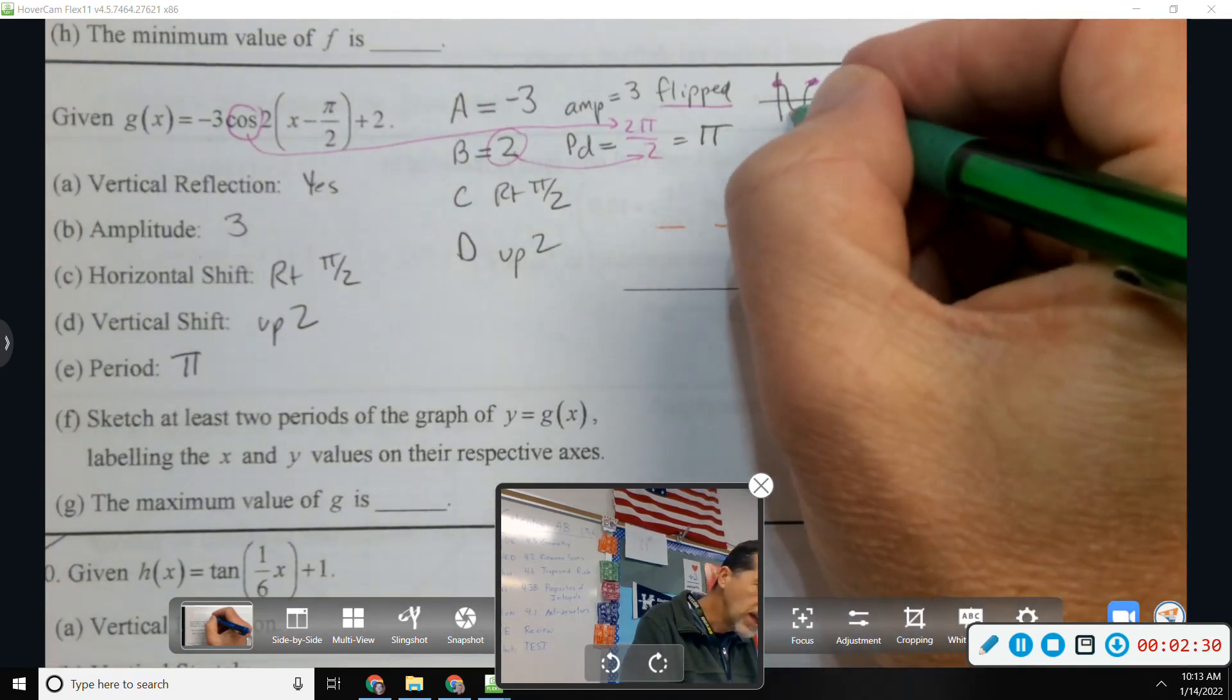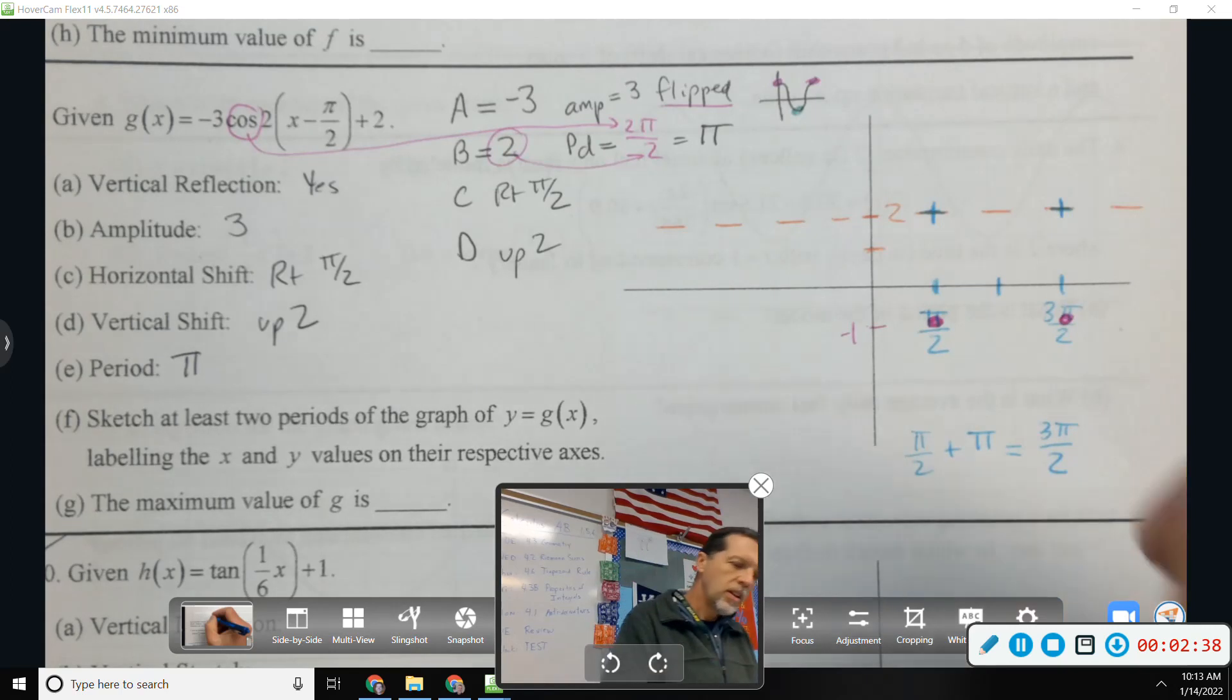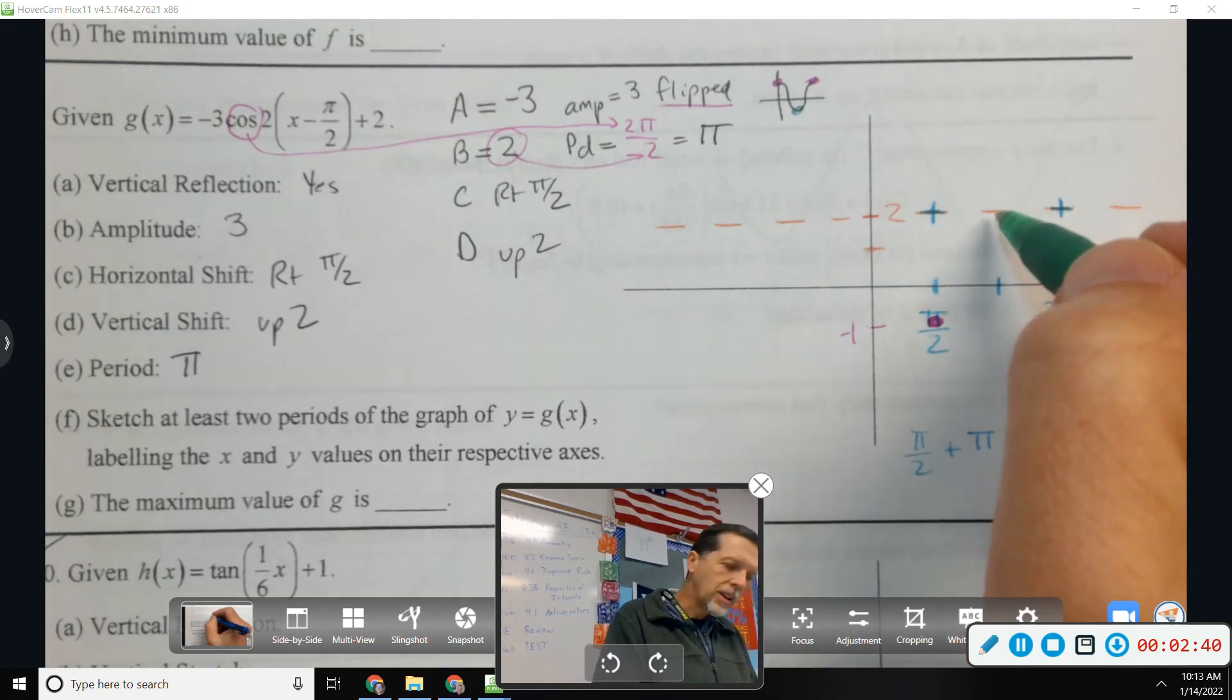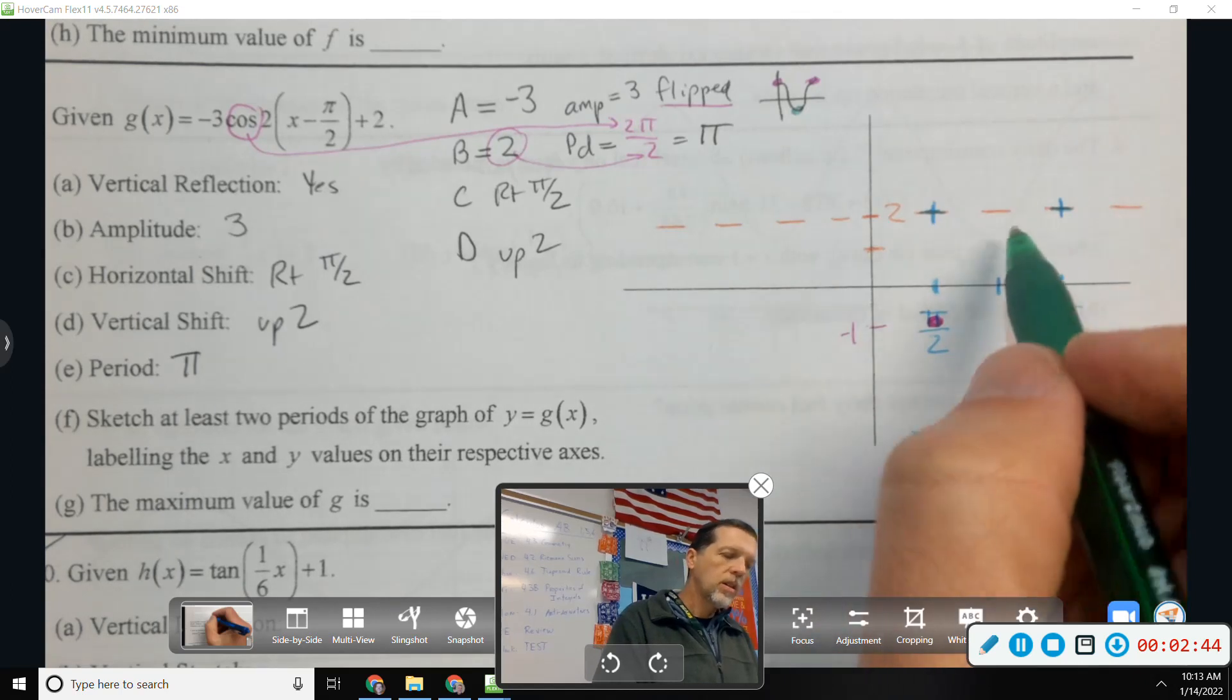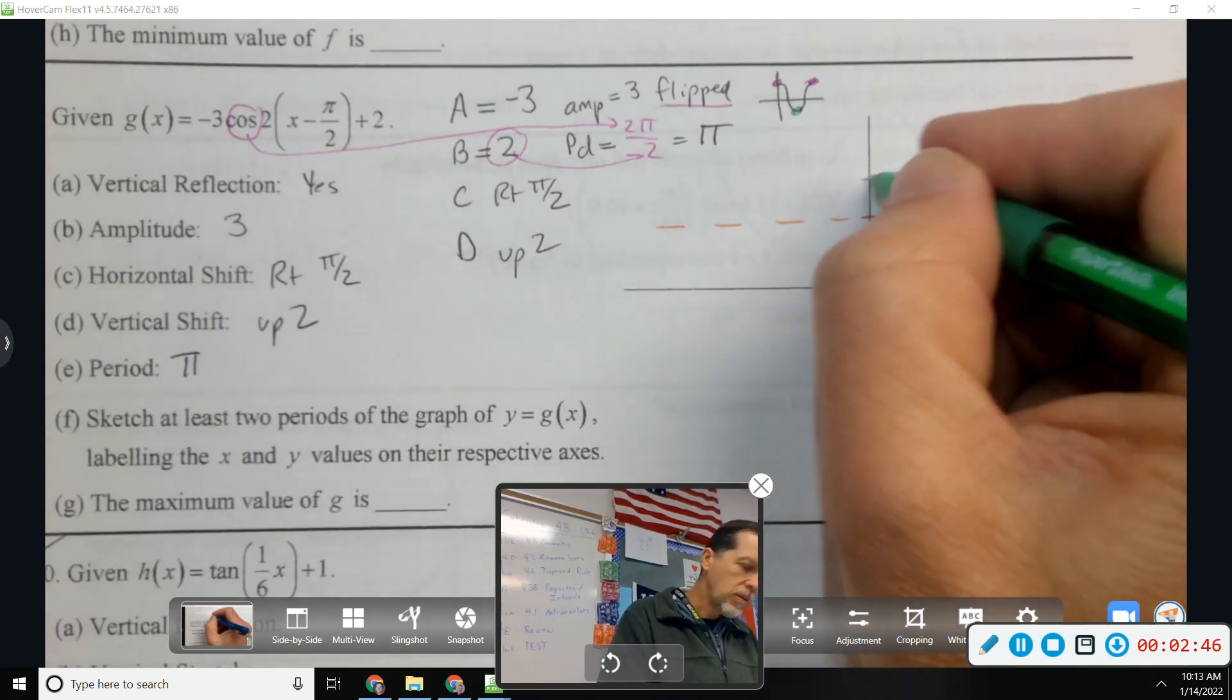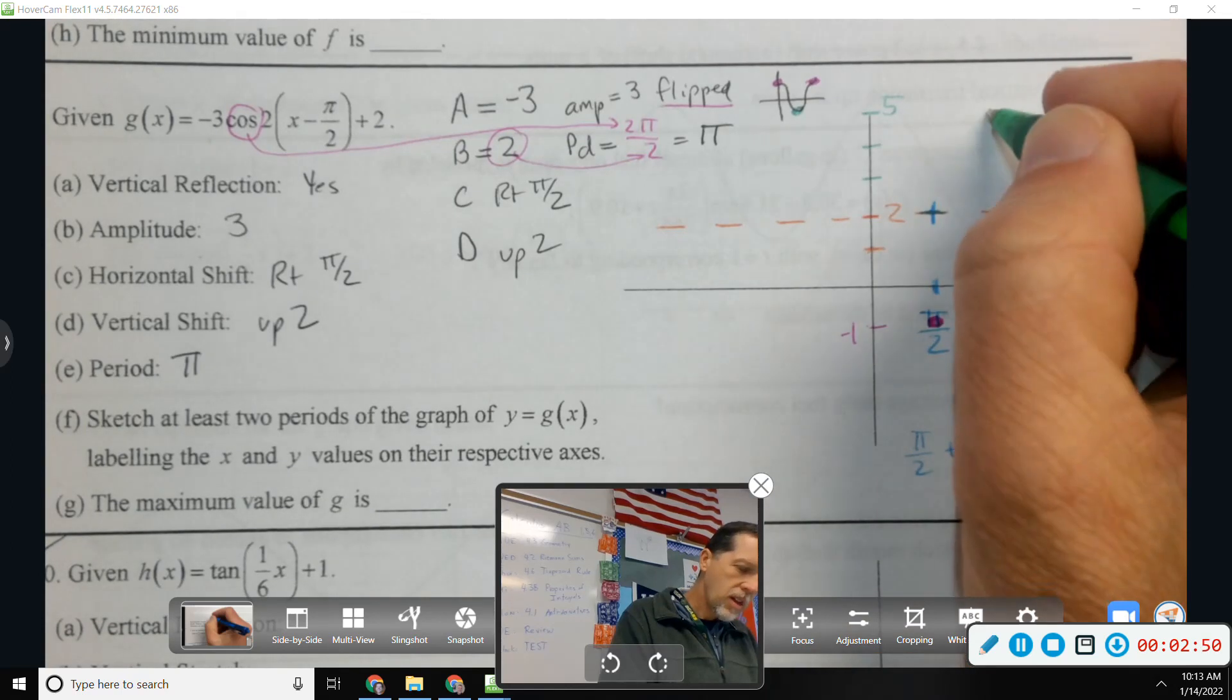Halfway in between, cosine is normally at a minimum. What's going on on this one? A maximum because it's flipped. So how do I locate the maximum? 3 from the midline. 1, 2, 3. So that puts me at 5. That's the halfway mark.